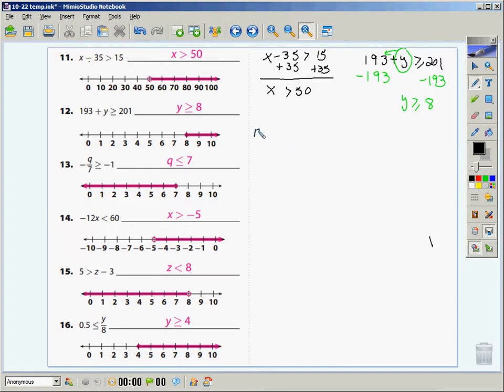Number 13 is probably one of the most missed questions, and there's a couple reasons that it is. A fraction is nothing more than a division problem. How do we get rid of division? Multiplication. This is the part where people get confused. I know that I need to multiply by 7, but because this was negative, I need to multiply by a negative 7. But the minute I multiply by a negative, what do I got to do to my inequality? I've got to flip it. So this is now q is less than or equal to a negative times a negative makes a positive. So it's going to be a filled in circle on 7, because it can be equal. And since it's getting smaller, I'm going to be going to the left.